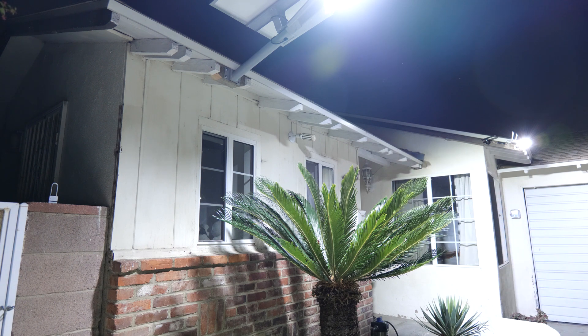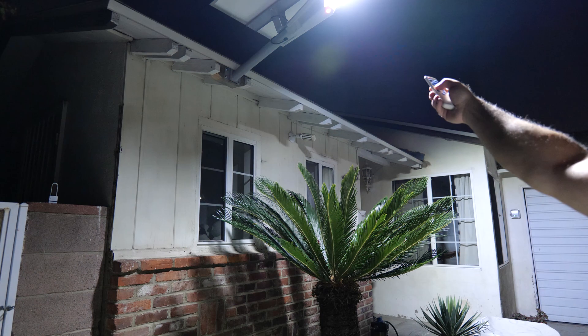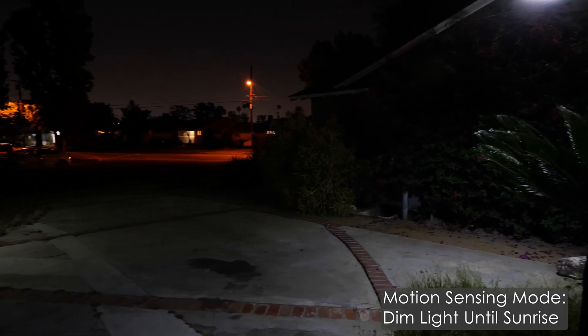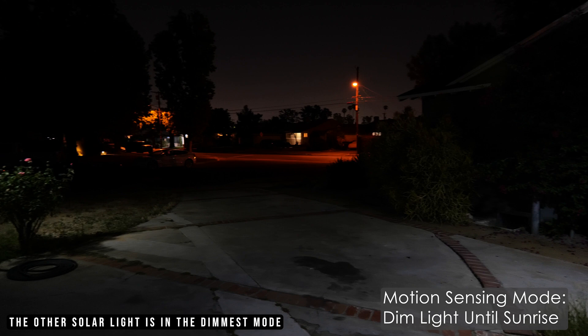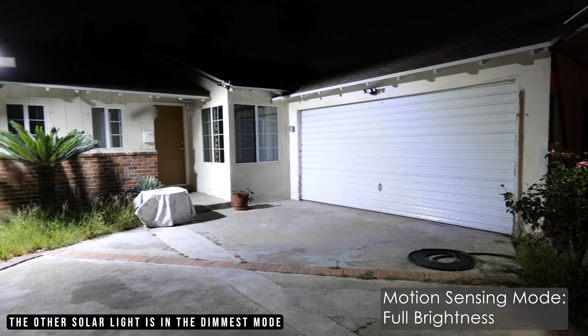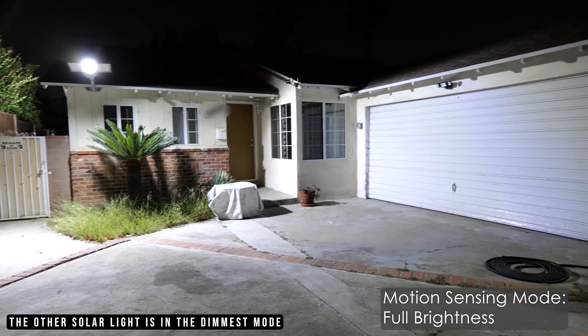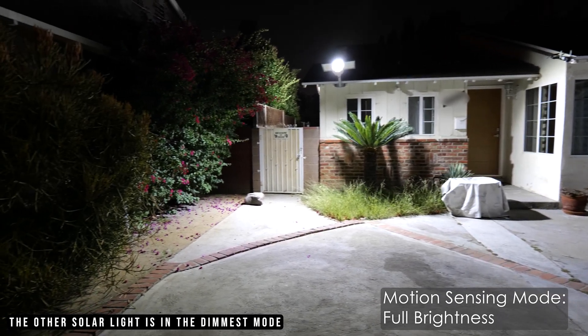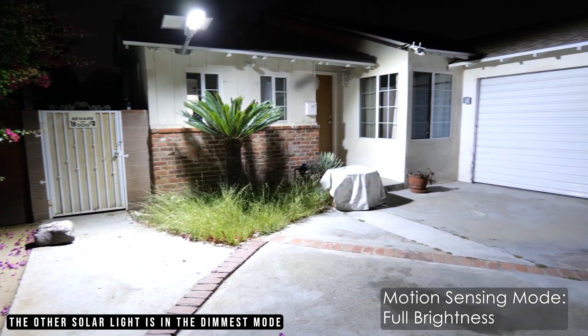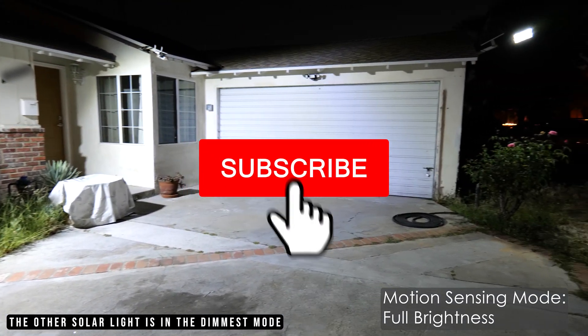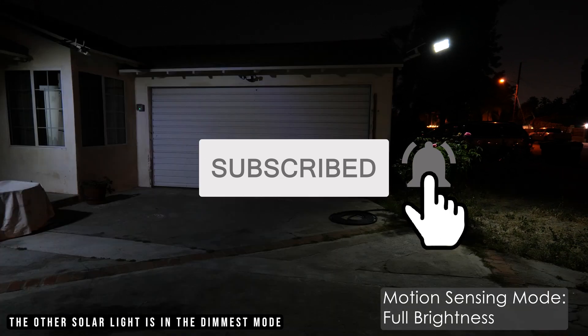You have a combination of light sensing and motion sensing mode. This is full brightness and that's half brightness, full brightness, half brightness.